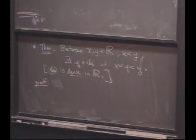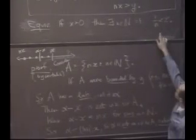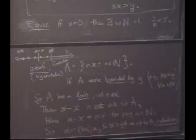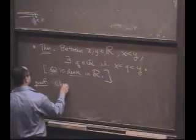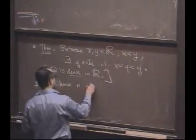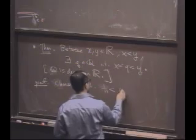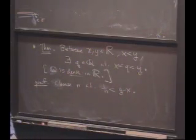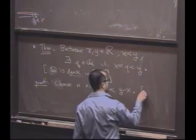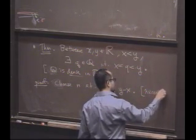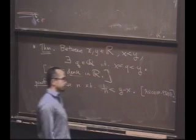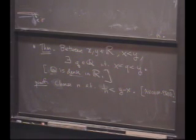I'm going to think about the Archimedean property in its equivalent form. You give me a number, there is a reciprocal that's smaller than that number, that positive number. So let's choose n such that 1 over n is less than the distance between y and x. You can't stop me from doing that. And this is the Archimedean property. Okay, that's where we've at least one place we've used it.